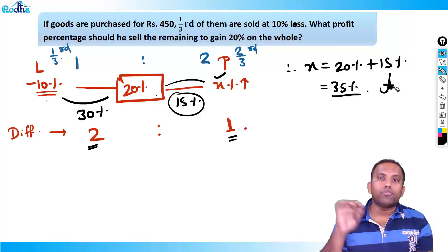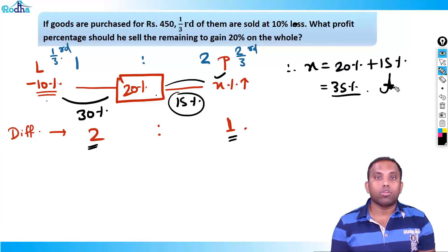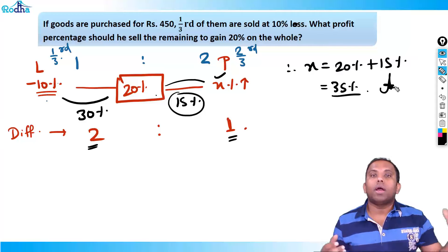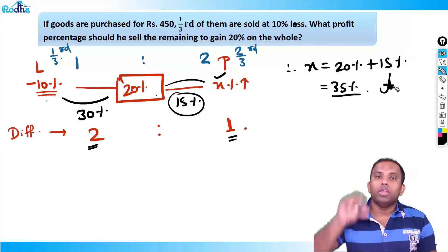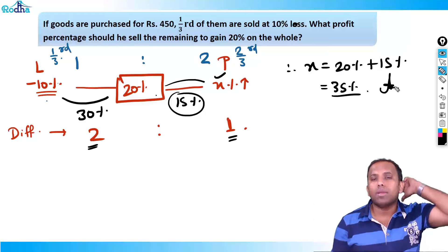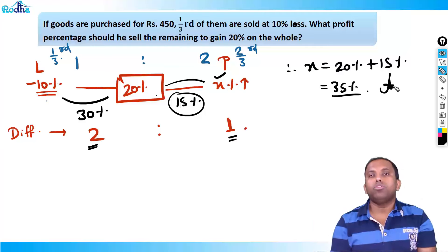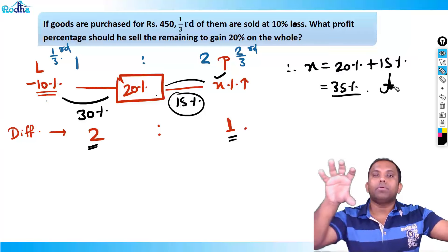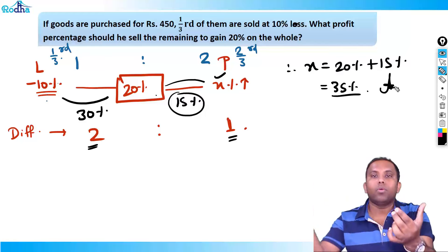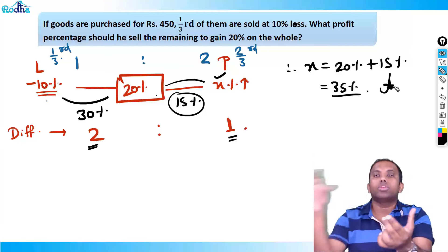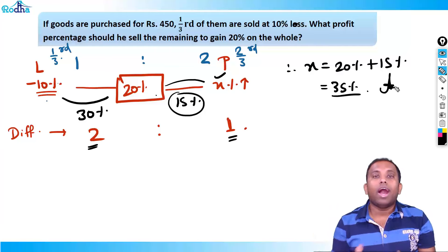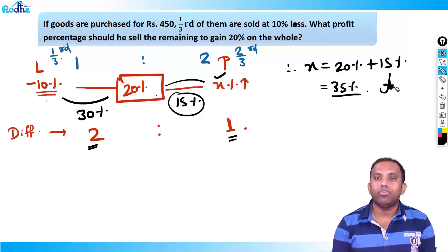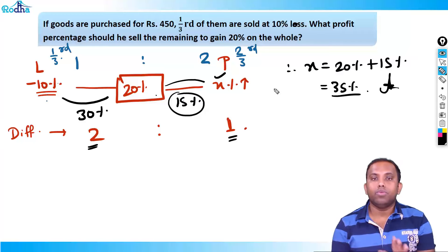A very logical and fast way of solving this profit and loss question. If you get this concept, you can solve it mentally in 10 seconds: difference is 30, actual ratio is 1:2, difference ratio is 2:1, two parts = 30 so one part = 15, answer is 35%. These kinds of concepts are super important. The difference method is much faster than writing out two ratio equations.